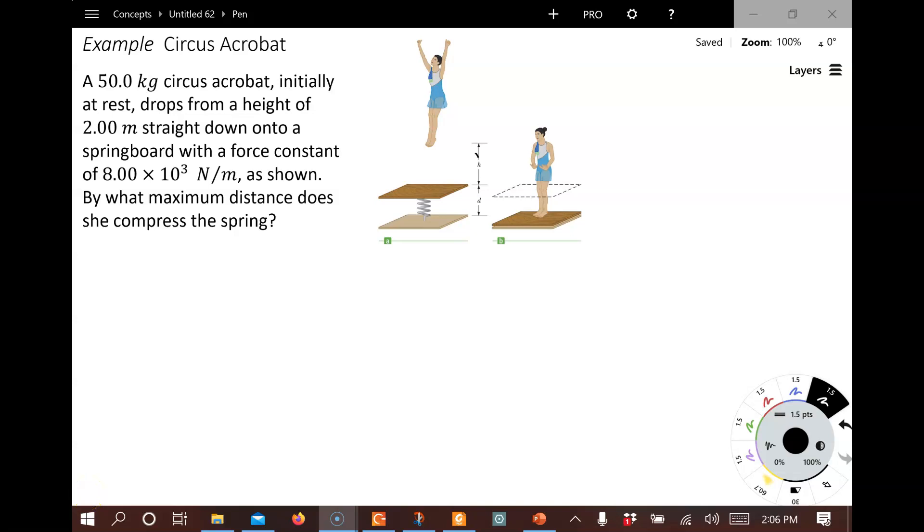Hi, in this example problem from chapter 10, we'll see how to solve a problem when you have both gravitational potential energy and elastic potential energy due to a spring. Pause for a moment and read the problem.